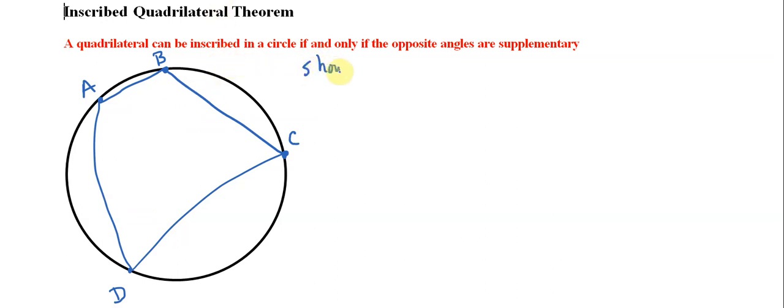And what we want to show and prove is that the measure of angle A... the opposite angles, maybe the best way we can say is that the angles that are not connected by any lines. So A and B are not opposite because they are connected by this line segment, but A and C are opposites.